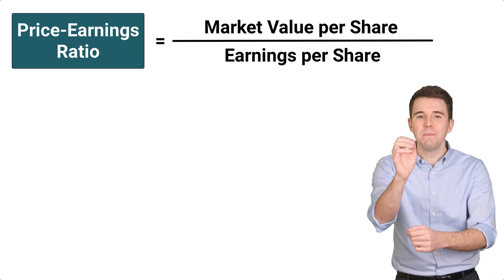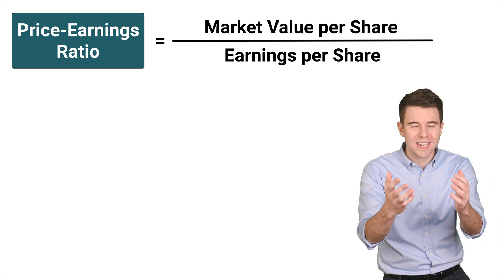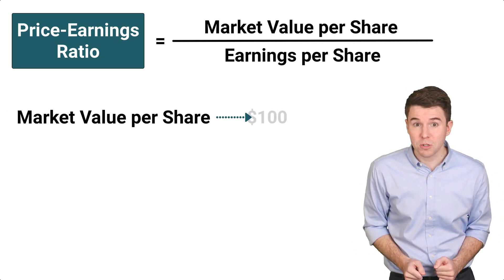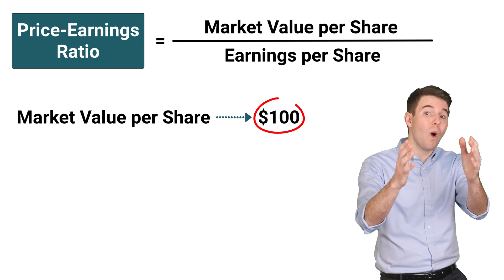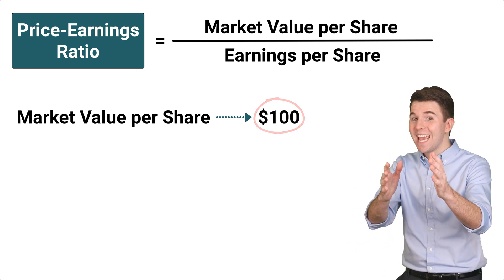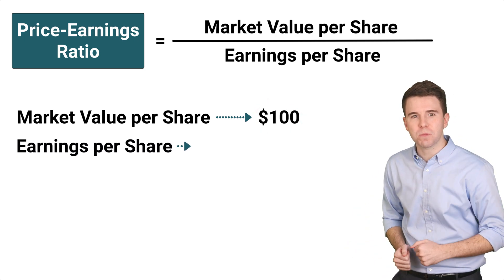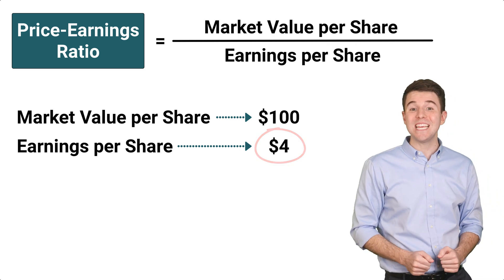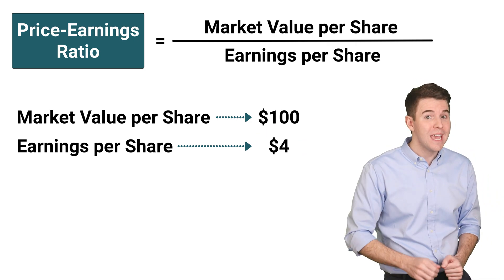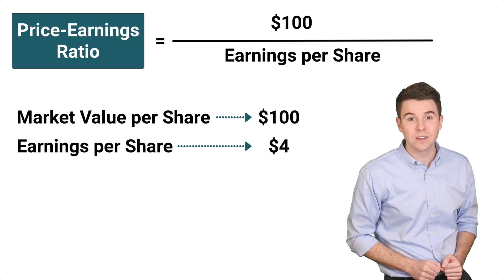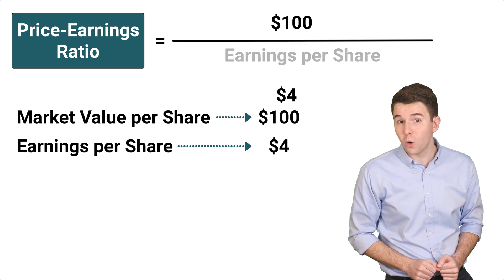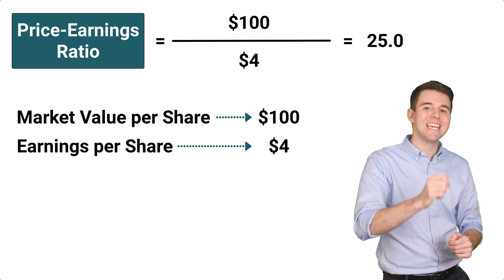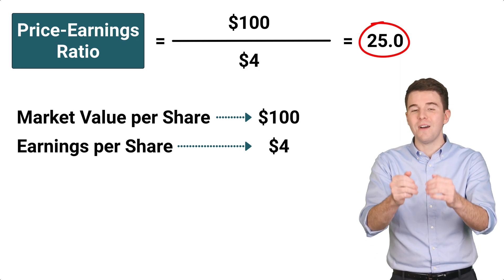Now let me show you how this works with an example. Let's assume a company's market value per share is $100, and its earnings per share is $4. To compute the PE Ratio, divide $100 by $4, which gives us a PE Ratio of 25.